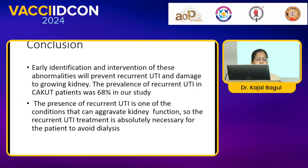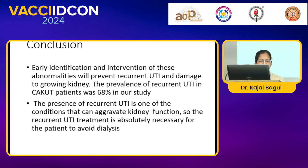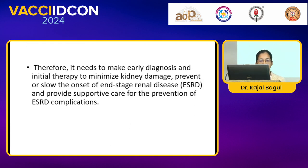In conclusion, early identification and intervention of these abnormalities can prevent recurrent UTI and damage to the growing kidneys. Prevalence of recurrent UTI in CAKUT patients in our study was found to be 68%. Recurrent UTI can aggravate kidney function, so treatment is absolutely necessary to avoid dialysis. Therefore, early diagnosis and initial therapy is needed to minimize kidney damage and prevent onset of end-stage renal disease.